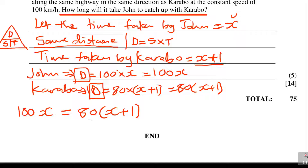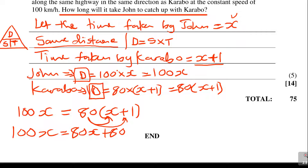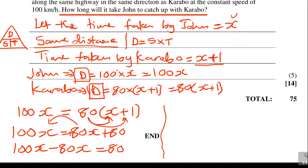Now use the FOIL method to expand: 100x equals 80x plus 80. Take 80x to the other side — it becomes minus 80x. So 100x minus 80x equals 80, which gives 20x equals 80.